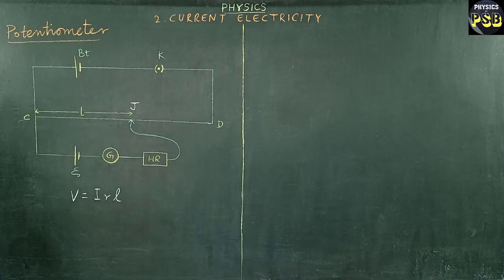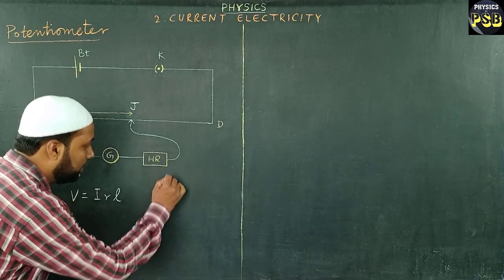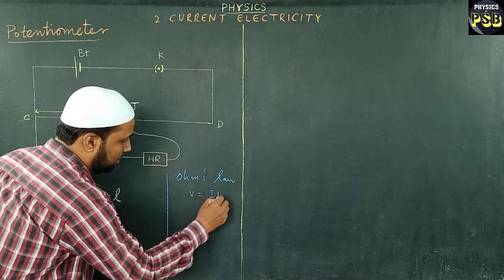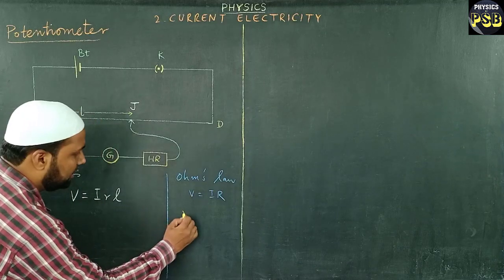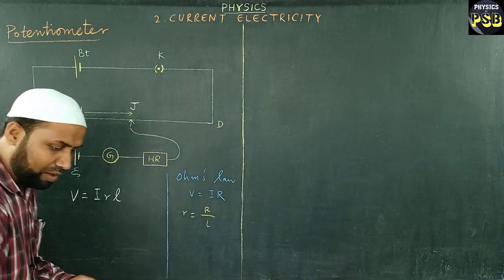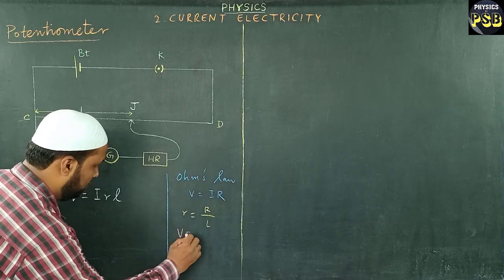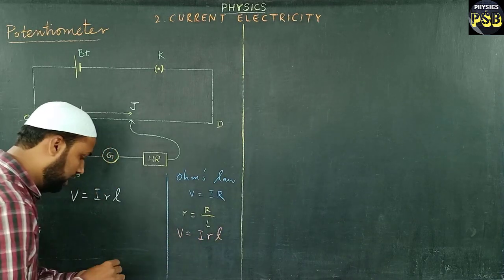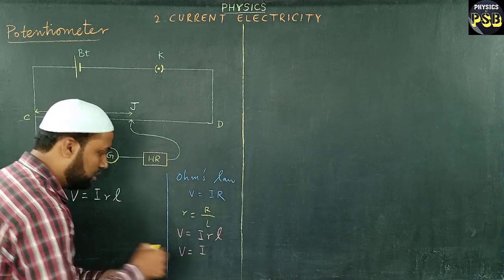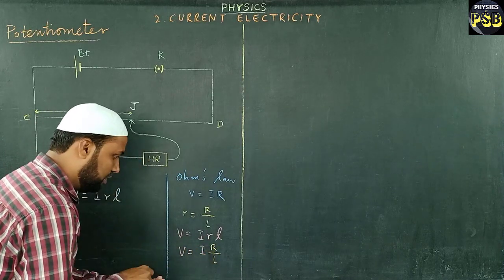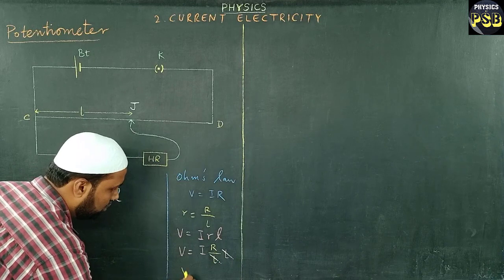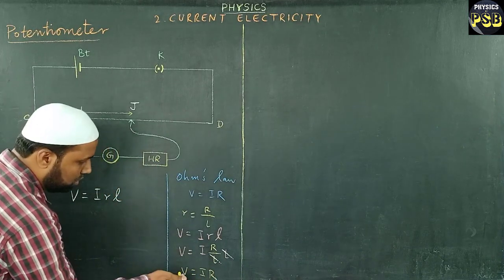This is obtained from Ohm's law. We know Ohm's law is V equals IR. Here, the small r is resistance per unit length of the wire. If resistance R equals r times L, substituting into Ohm's law gives V equals I times r times L, which is consistent with Ohm's law.